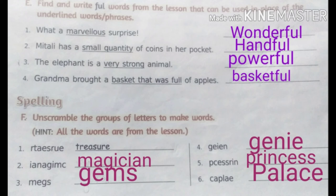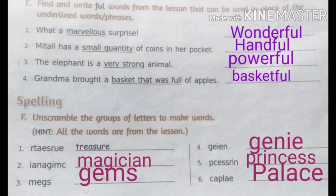The next exercise is unscramble the group of letters to make words. It means unscrambled letters are given to you and you have to arrange those letters into a meaningful word which is already mentioned in your lesson. The first one is r-t-a-e-s-r-u-e, with these letters we can make the word treasure. The next one is i-a-n-a-g-i-m-c, with these letters we can make the word magician.